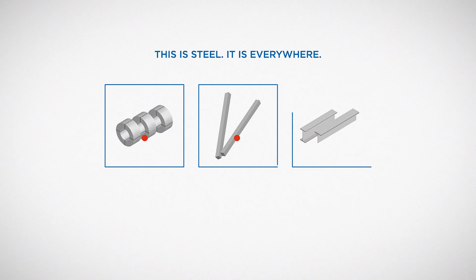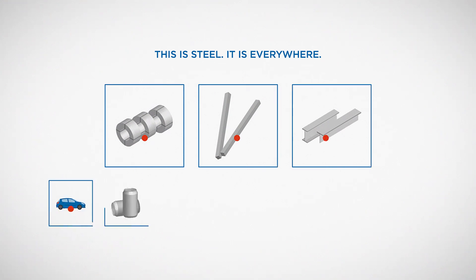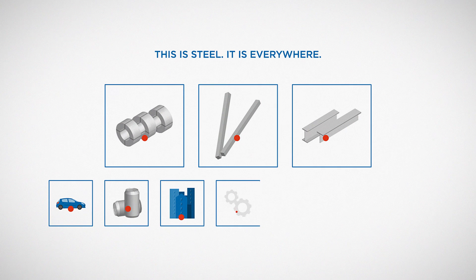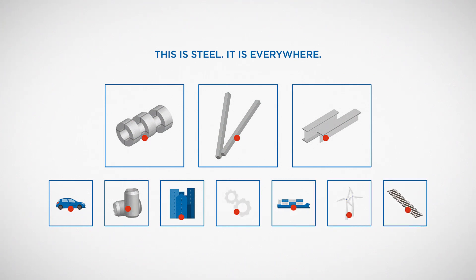This is steel. It is everywhere, all around us in our day-to-day lives. You can find it in cars, drinks cans, buildings, machinery, ships, windmills, trains and more.